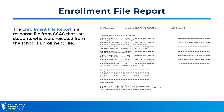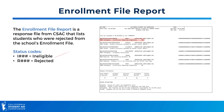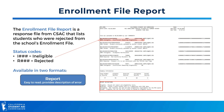Finally, the enrollment file report will contain a list of students who are ineligible or rejected from the school's enrollment file. Status codes include ineligible or I codes and rejected or R codes. See the bottom of the report for definitions. This report is available in two formats: an easy-to-read report and a data file.